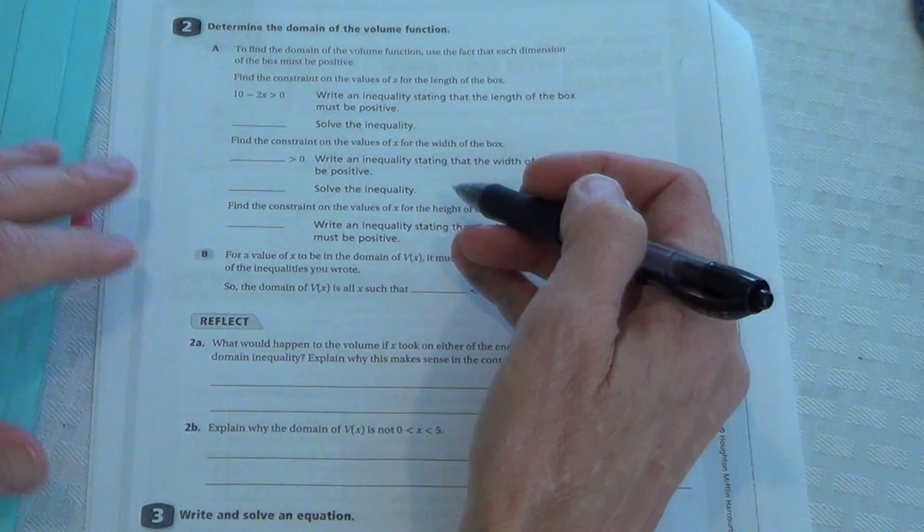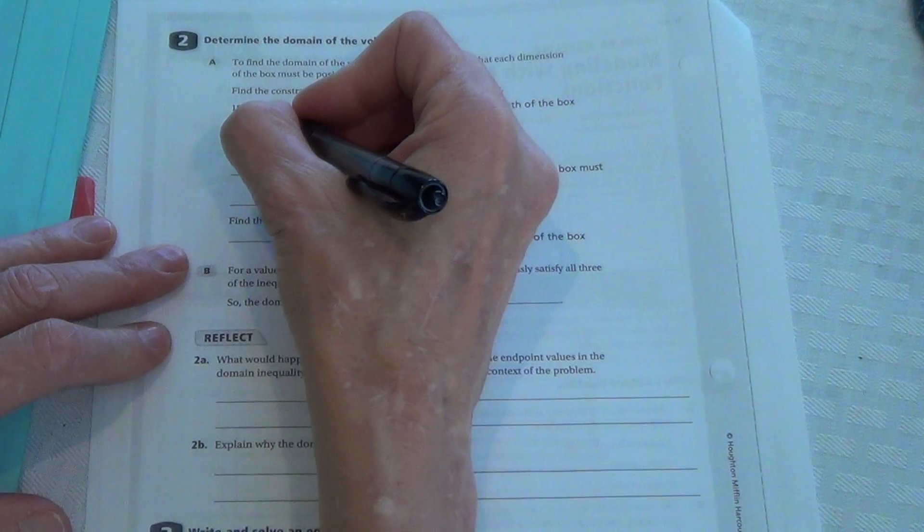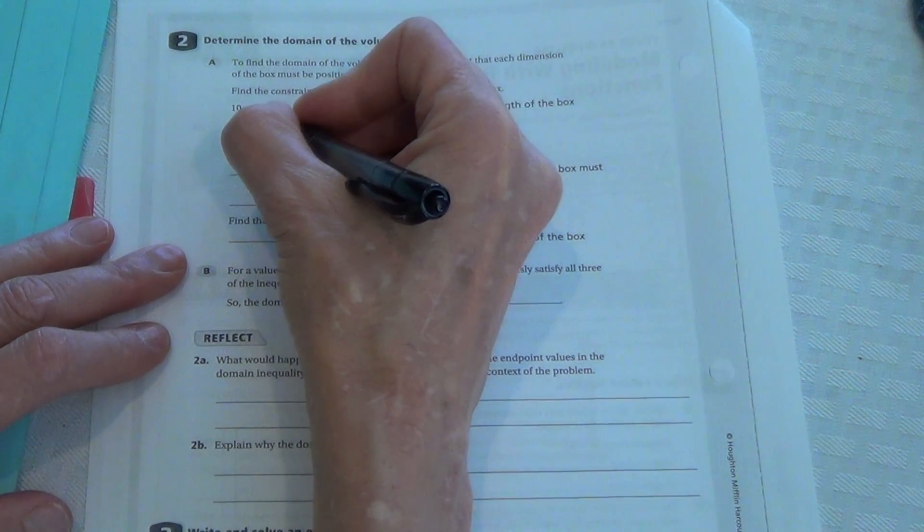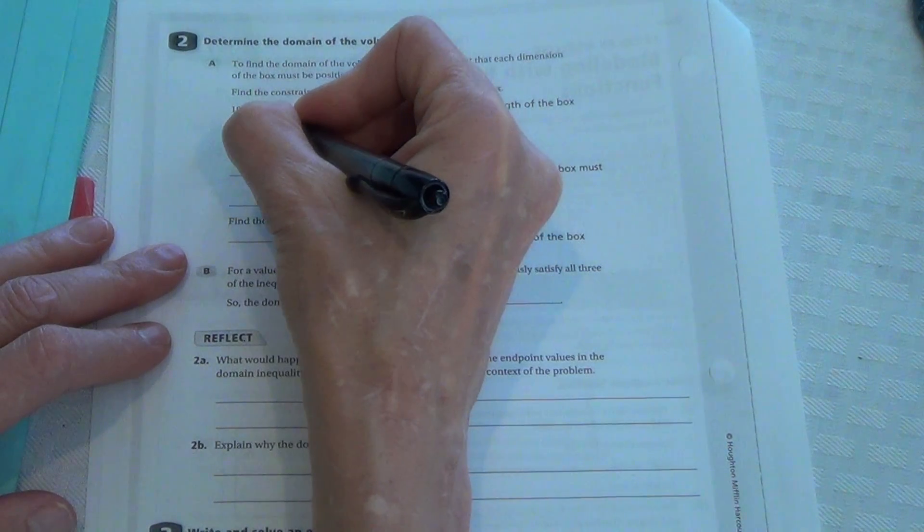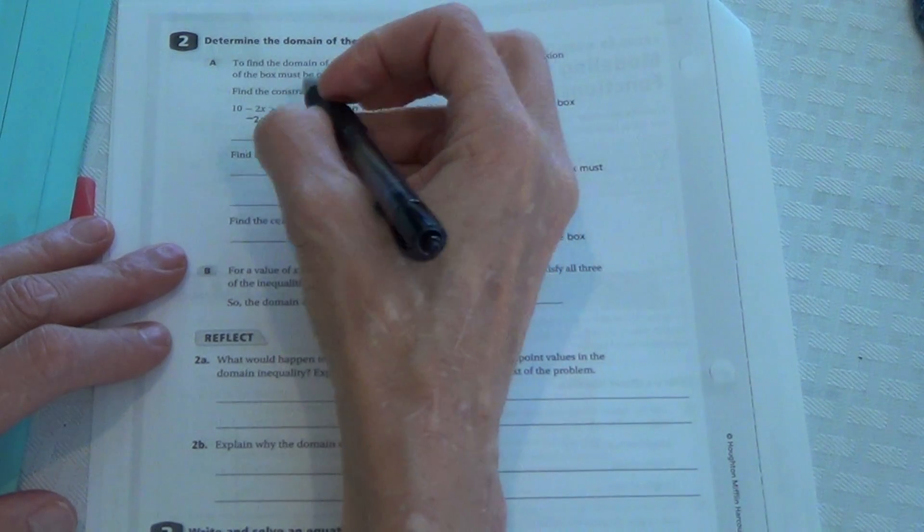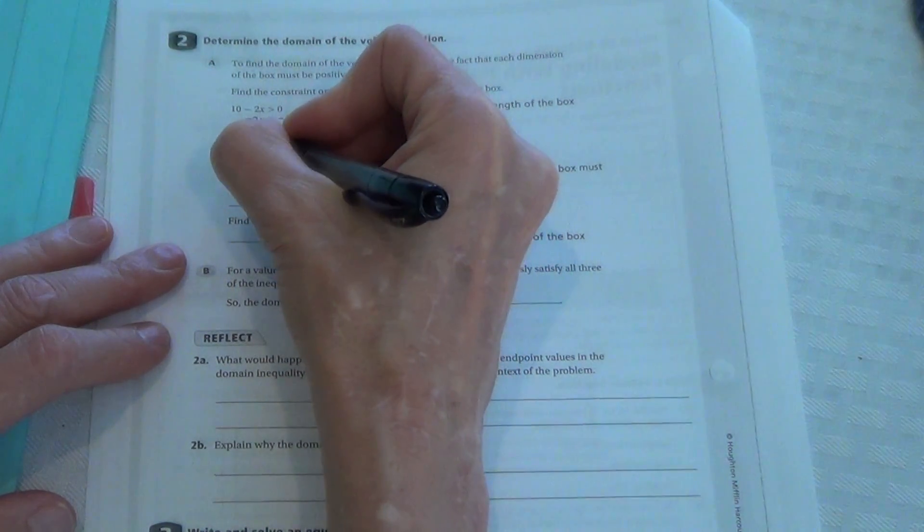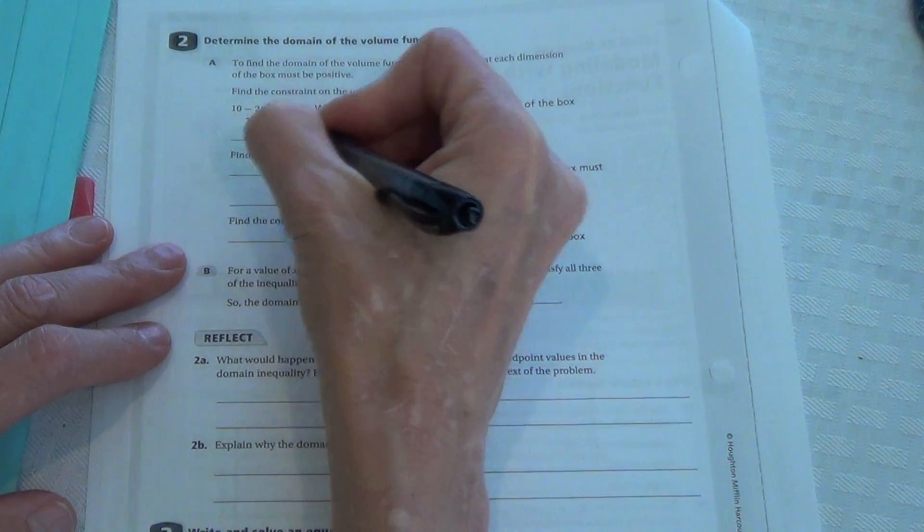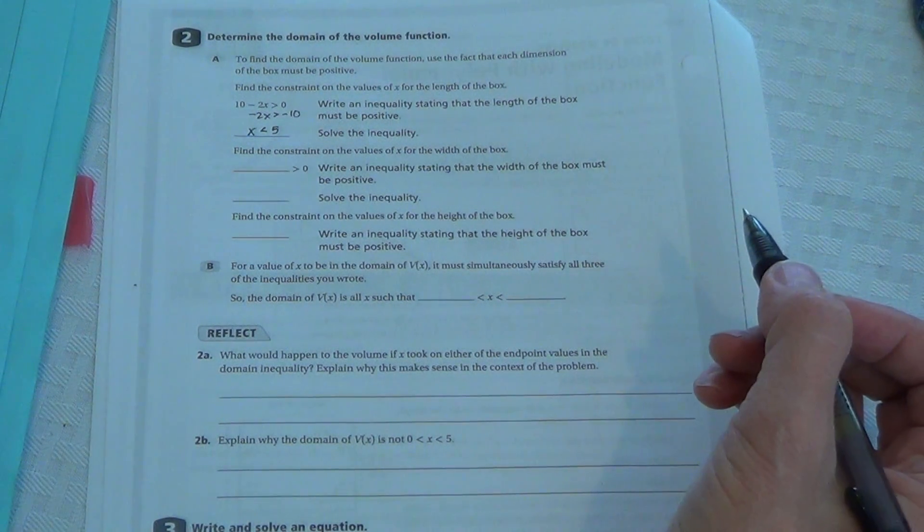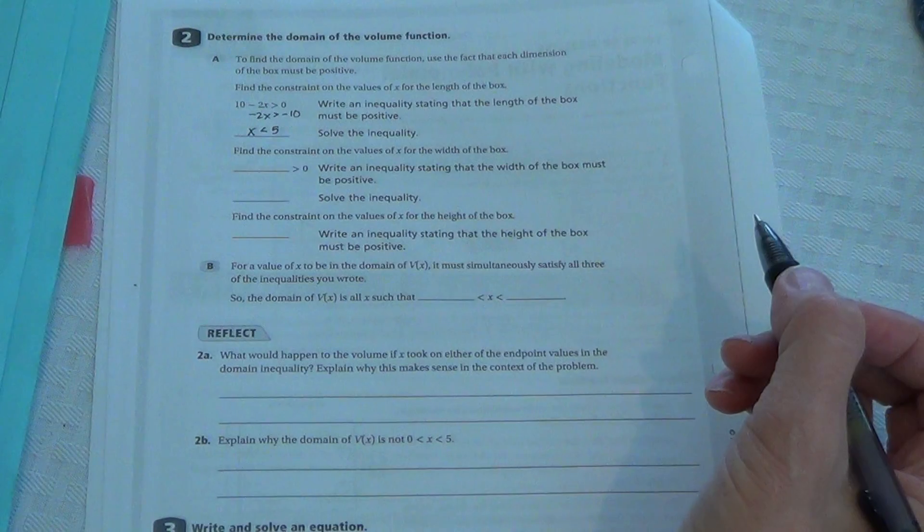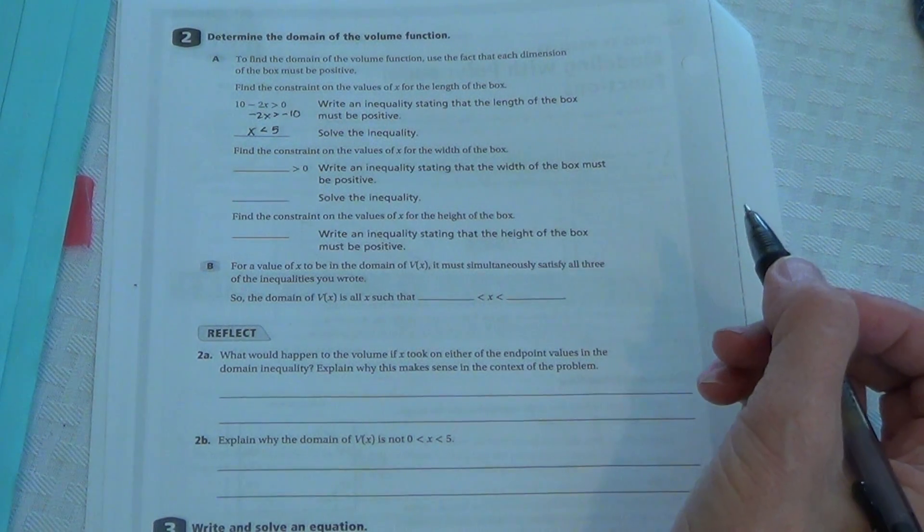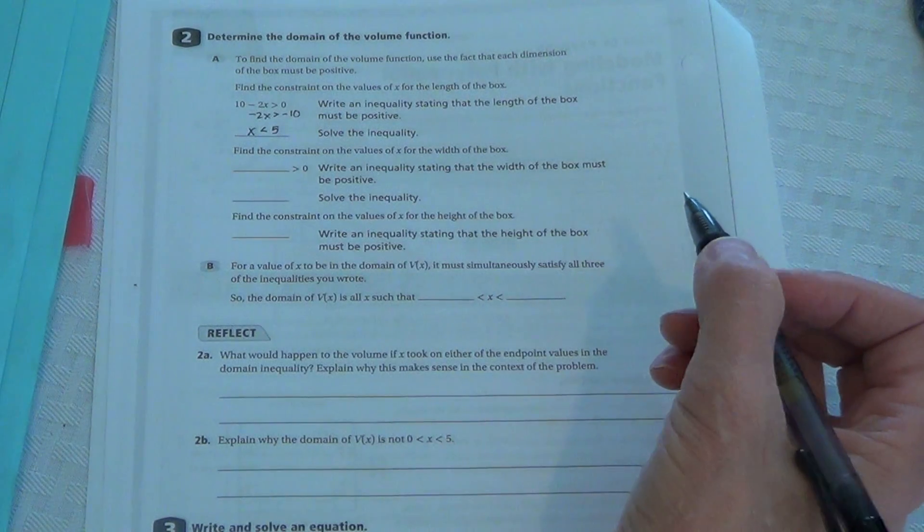And you can mathematically solve that by getting the x by itself. We would subtract 10 on each side. So it would be negative 2x is greater than negative 10. Divide by negative 2, it'll be x is less than 5. The reason being, you can't go more than 5. And you need to be less than 5, not equal to 5, because if you're equal to 5, you have no dimension on that last side.